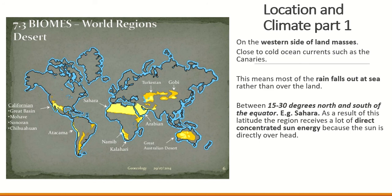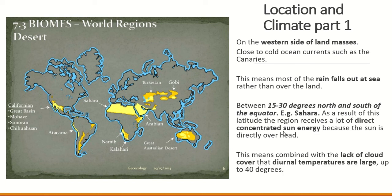Where else can deserts be found? They are found between 15 and 30 degrees north and south of the equator. As a result of this latitude, the region receives a lot of direct sunlight — they're very near the equator and the sun shines directly on it. Because deserts are so near the equator, they get a lot of direct sunlight, which brings unbelievably hot weather, particularly during the daytime, because the sun is directly overhead. If you put your hand directly below a light bulb, your hand would get hot very quickly — whereas if you moved your hand away, you would not experience the same level of intense heat.